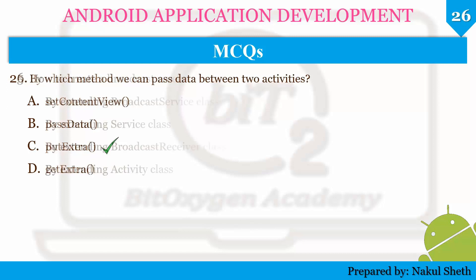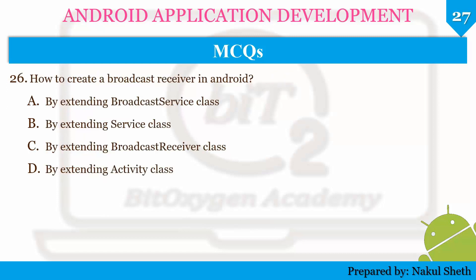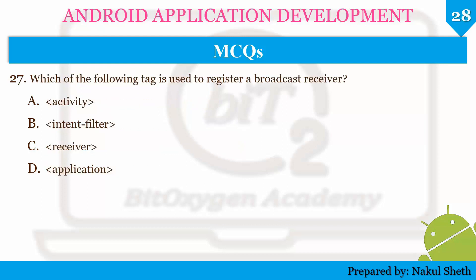Next question: how to create a broadcast receiver in Android? The options are: by extending BroadcastServices class, by extending Service class, by extending BroadcastReceiver class, or by extending Activity class. The correct answer is by extending the BroadcastReceiver class. Next question: which tag is used to register a broadcast receiver? The options are activity, intent-filters, receiver, or application. The correct answer is receiver.